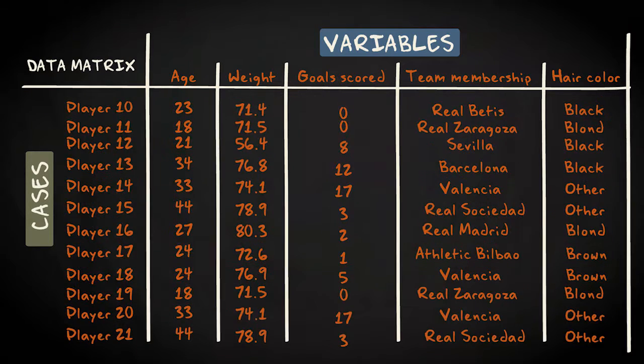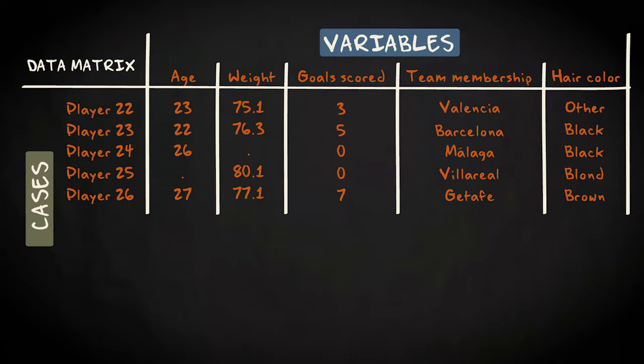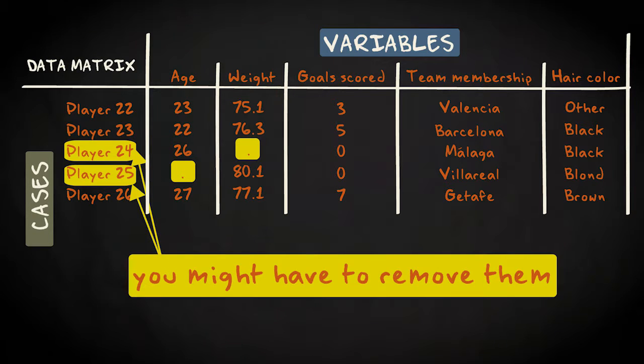Let's see if our data matrix does not contain strange values. Hey, when we look at player 24, we see no value for weight. And in the next row, age is missing. So we don't know the value for every case-variable combination. For now, we have just included these incomplete cases, but we might have to remove them if a subsequent analysis requires a complete data matrix.